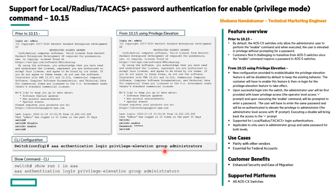Let's see what happens when this feature is enabled. When the administrator user logs into the switch, they will first be given lower privilege access — that is the operator prompt. They need to execute the enable command to get into the administrator level. When they execute the enable command, they will be prompted to enter a password — the same password used during the initial authentication. The user will then be re-authenticated to elevate the privilege to the administrator level, indicated by the hash prompt.